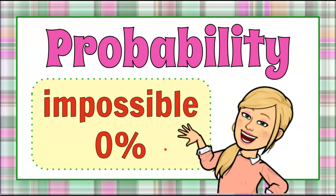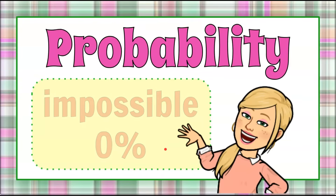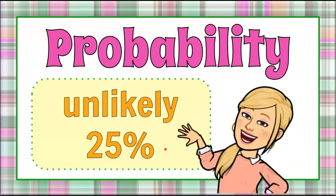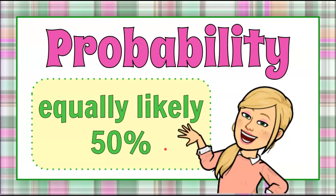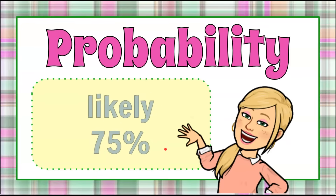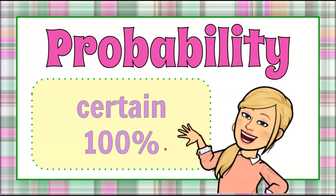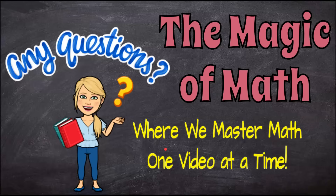There you have it — that is probability: how to find and describe outcomes using impossible, unlikely, equally likely, likely, or certain. Thanks for joining me today at The Magic of Math, where we continue to master math one video at a time. I hope you have a great day and come back soon.